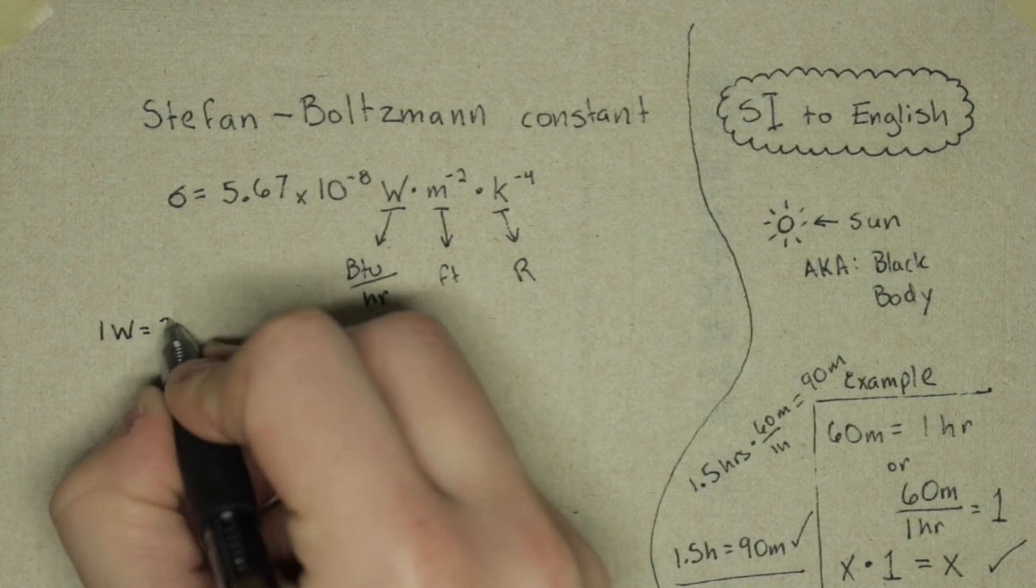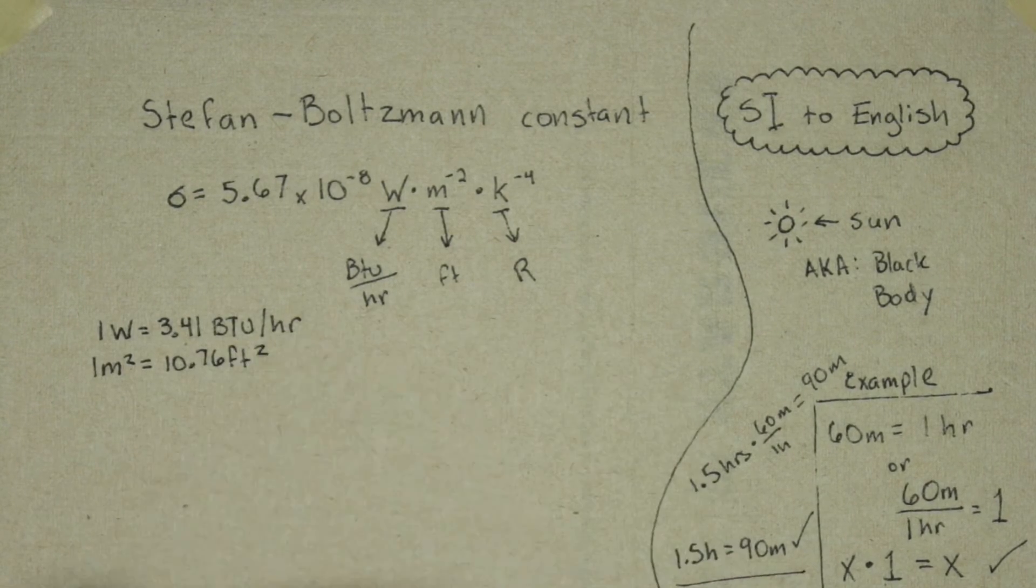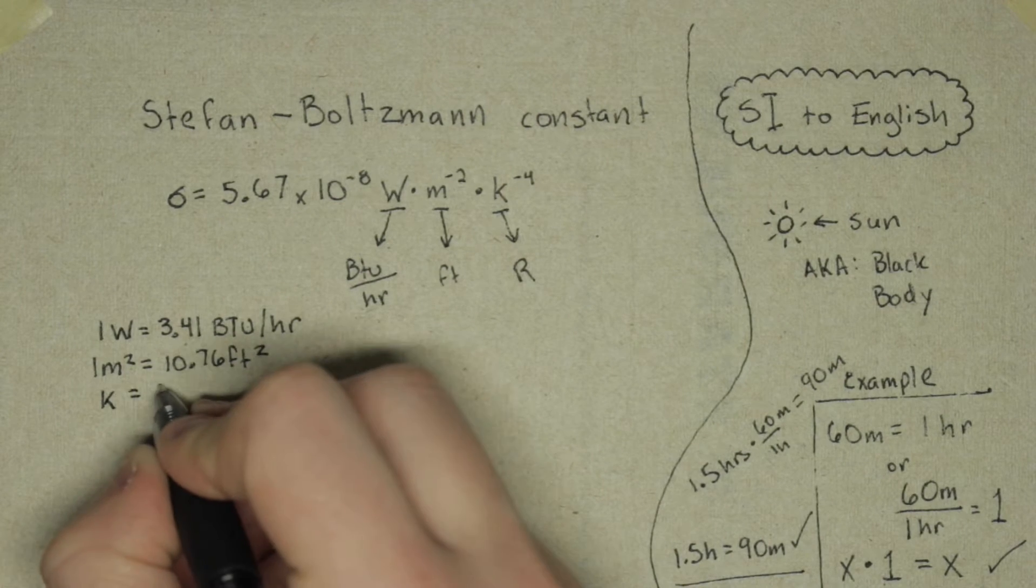Finding conversion tables online, write down how watts is related to BTUs per hour, meters squared is equal to feet squared, and how Kelvin is related to Rankine.